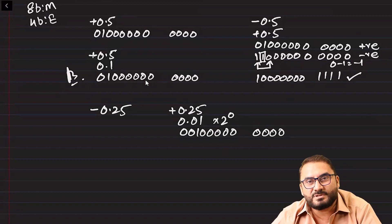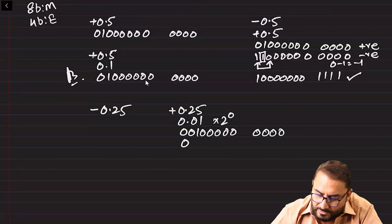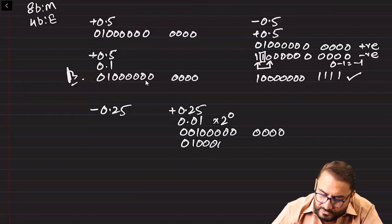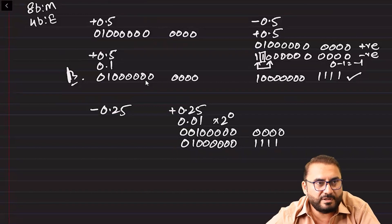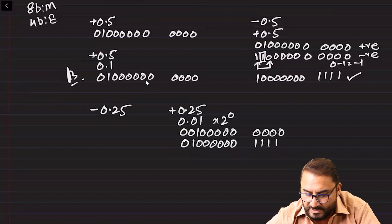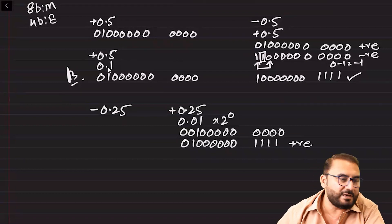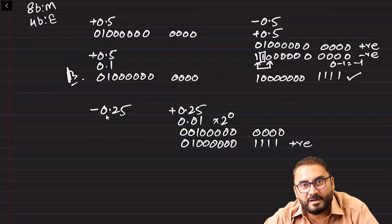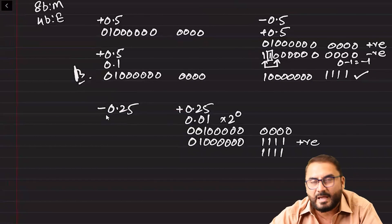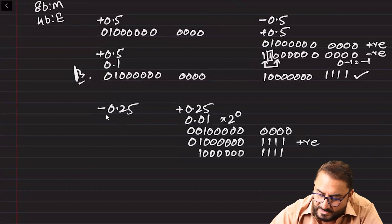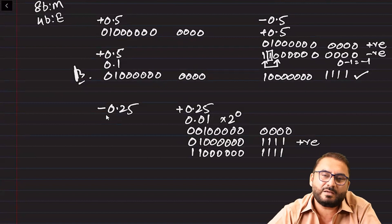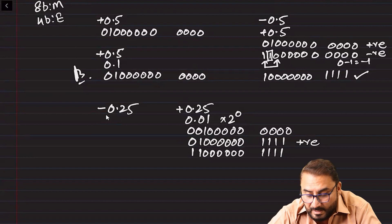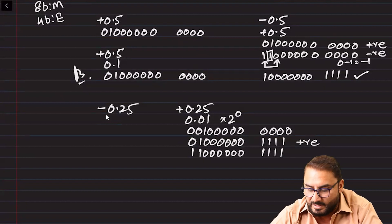To normalize 0.25's positive form: we remove the one bit between the first two different bits, giving mantissa 0 1 0 0 0 0 0 0 and exponent 0 minus 1, which is negative 1. Now we convert to negative: keep the exponent as minus 1, keep mantissa from the right to the first one the same, and toggle the rest. The result after toggling gives the normalized negative form — it is already normalized since the first two bits are different.